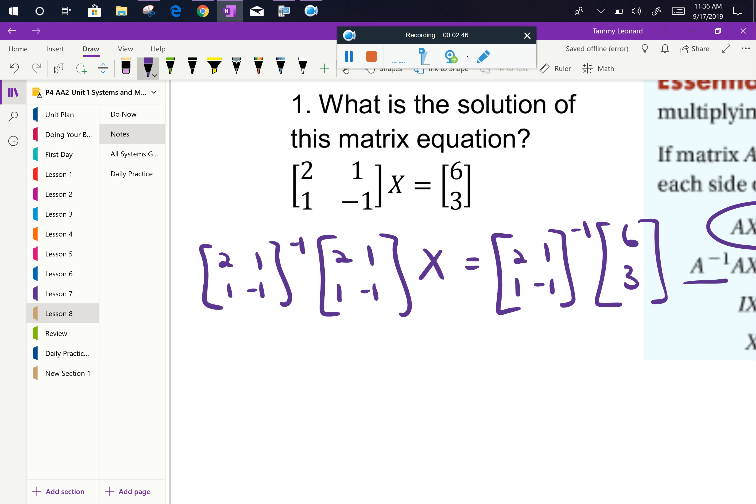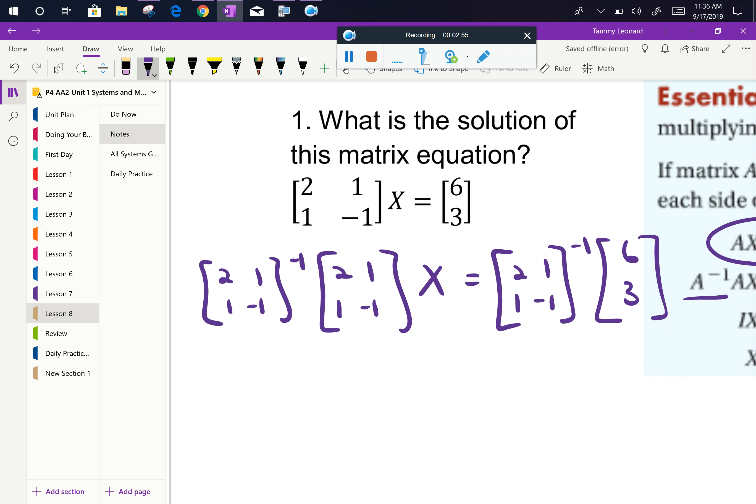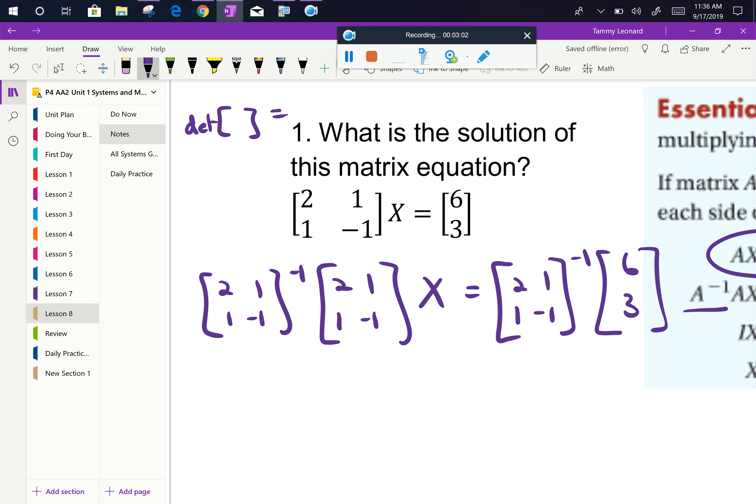So let's practice doing the inverse. If I want to do the inverse of a 2 by 2, you all know that first you have to do what? Get the determinant. So if I want to take the determinant of that matrix, the determinant of that matrix, we know that we take the diagonal product 2 times negative 1 is negative 2, and we subtract the product of the other diagonal. So we're subtracting 1. So the determinant is negative 3.